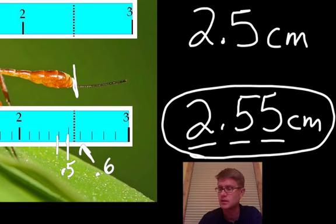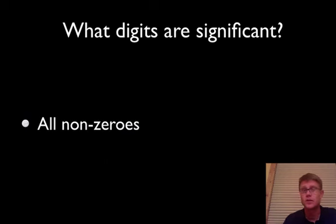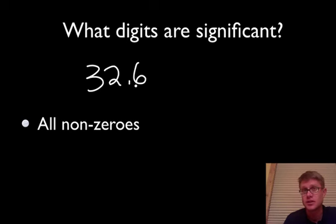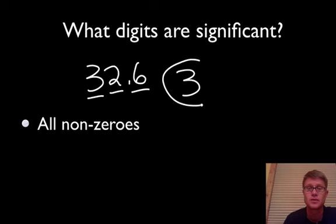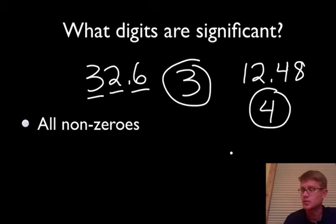What kinds of digits are significant? There are 4 types. First, any non-zero number is significant. So if you see 32.6, the 3, 2, and 6 are all significant — that's 3 significant digits. Or 12.48 would have 4 significant digits because there are no zeros in it.